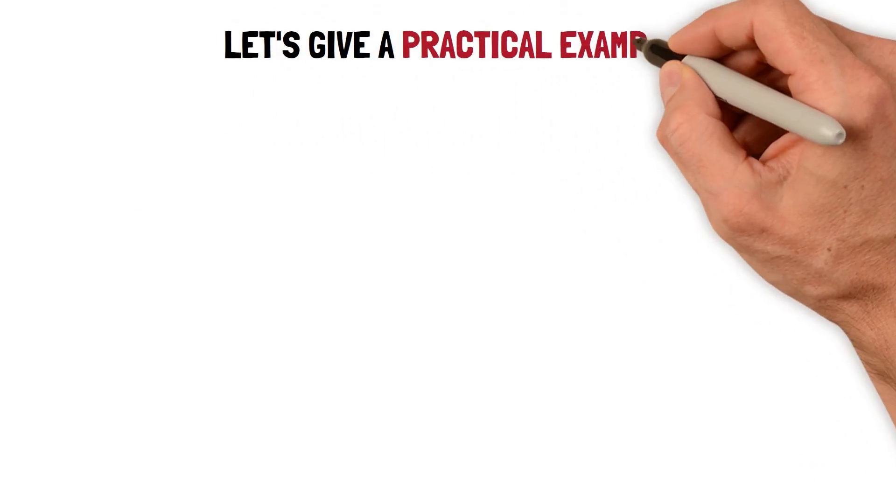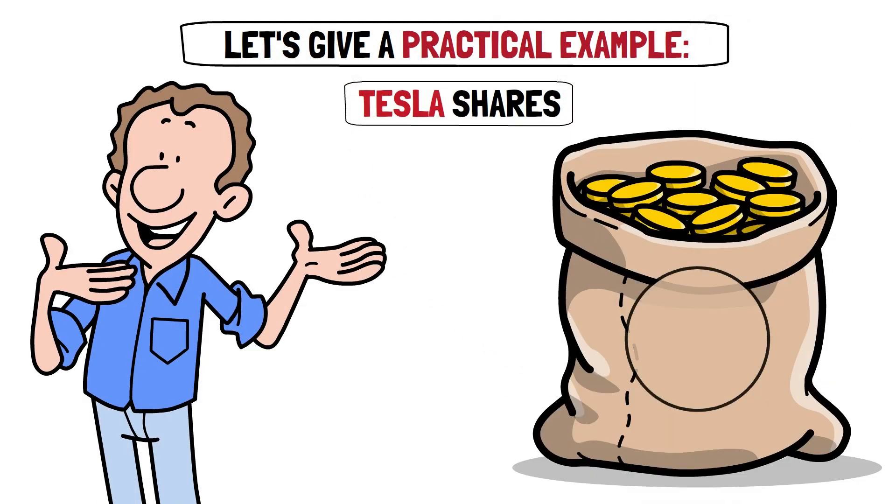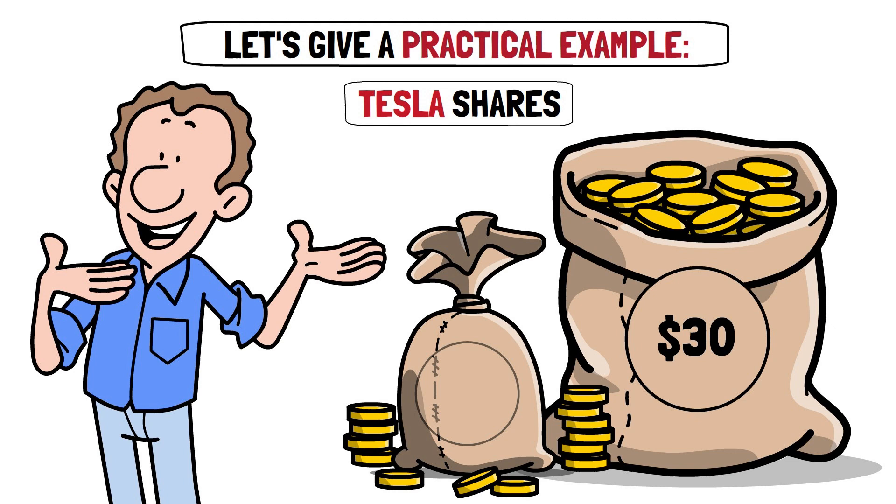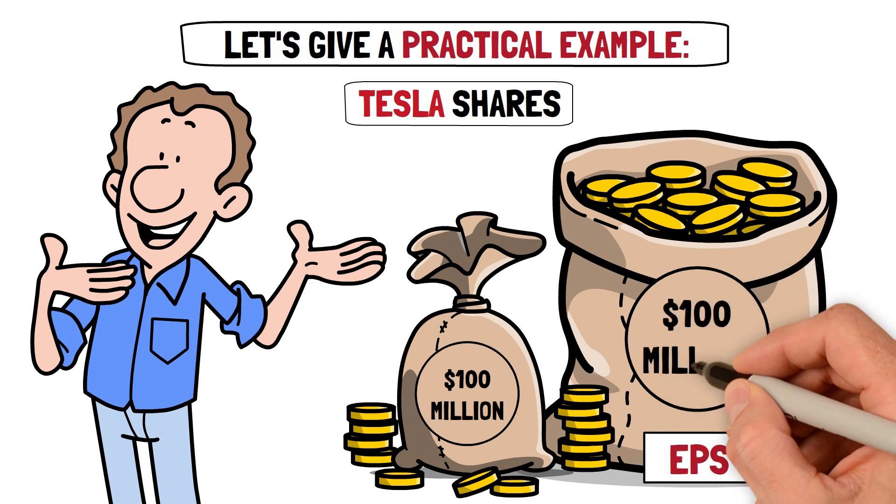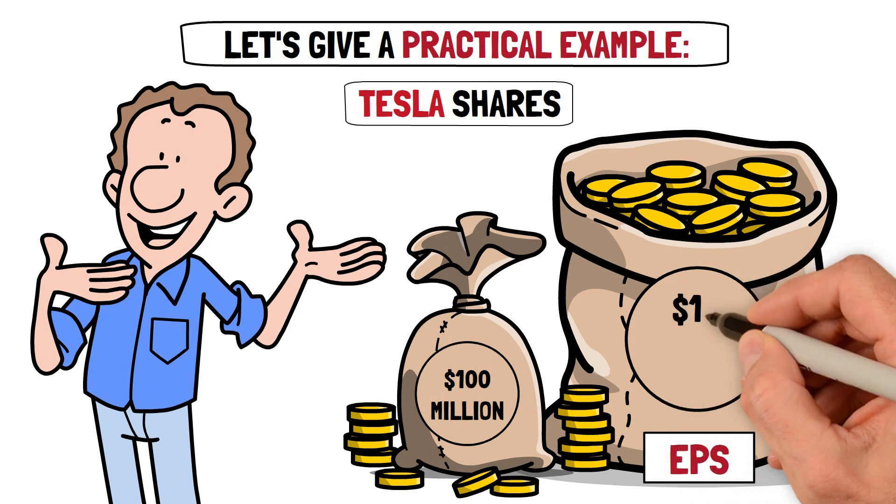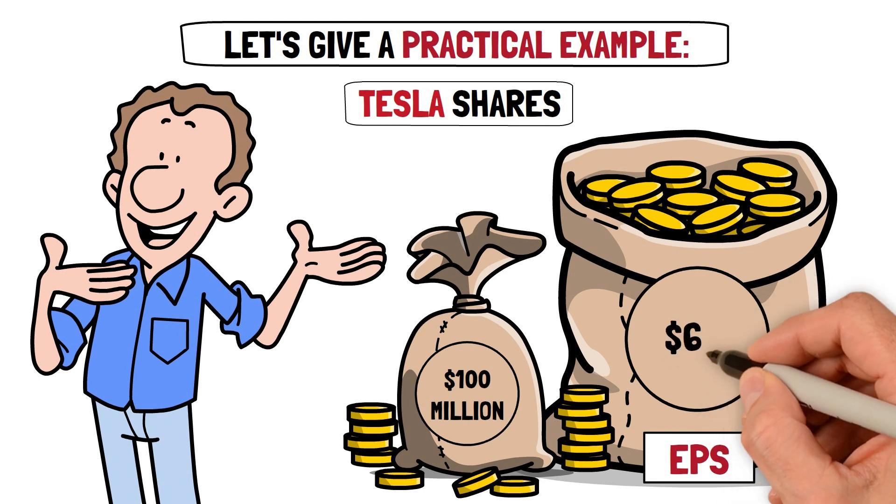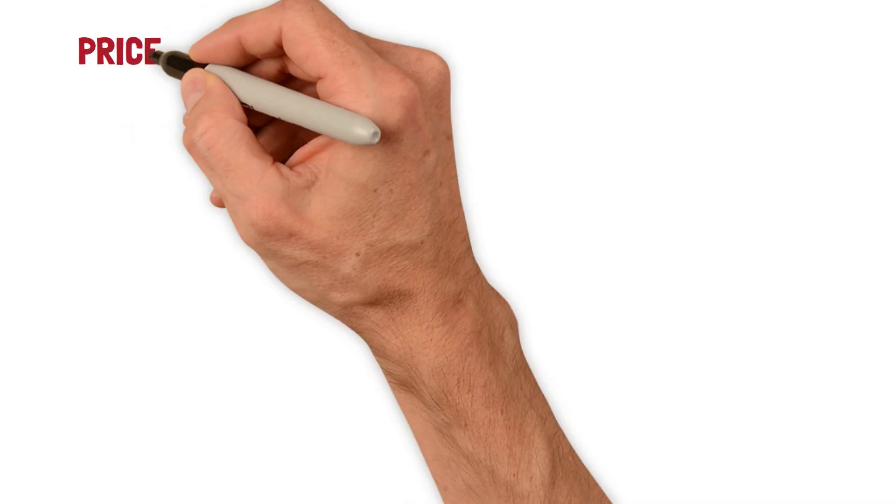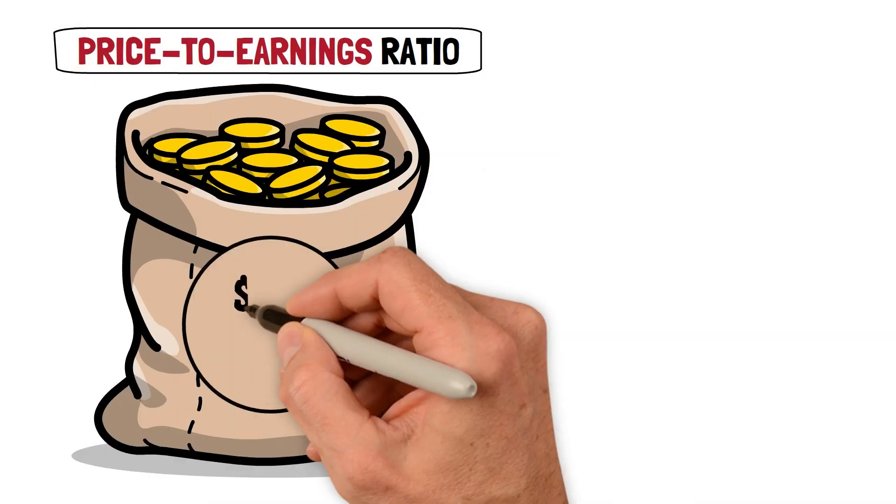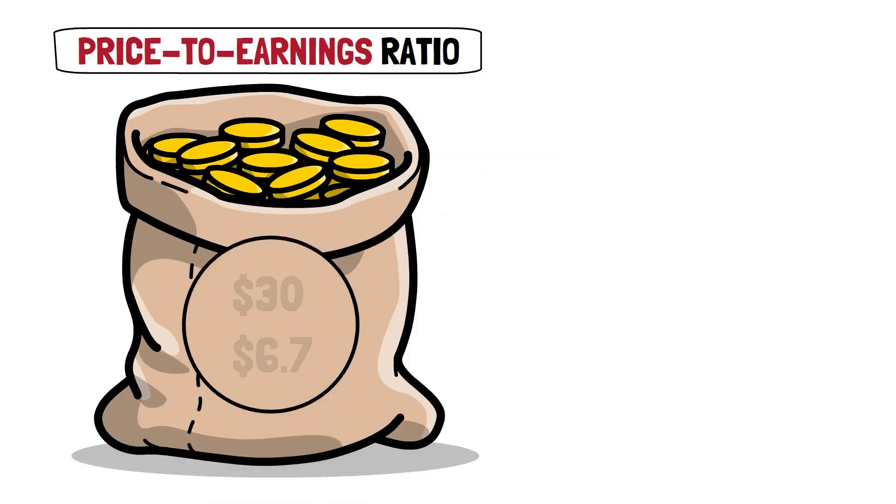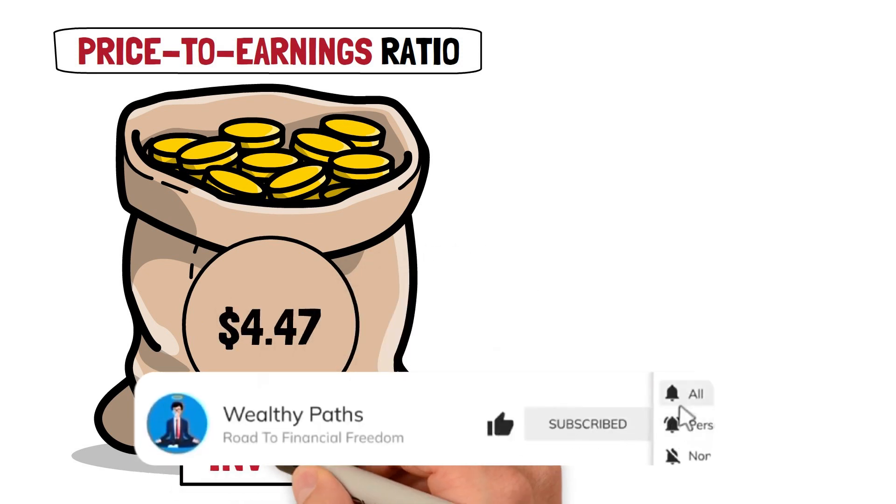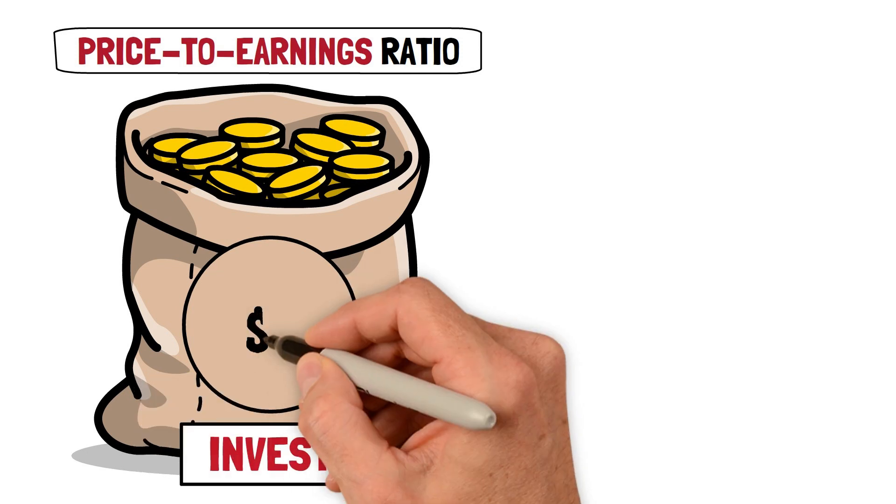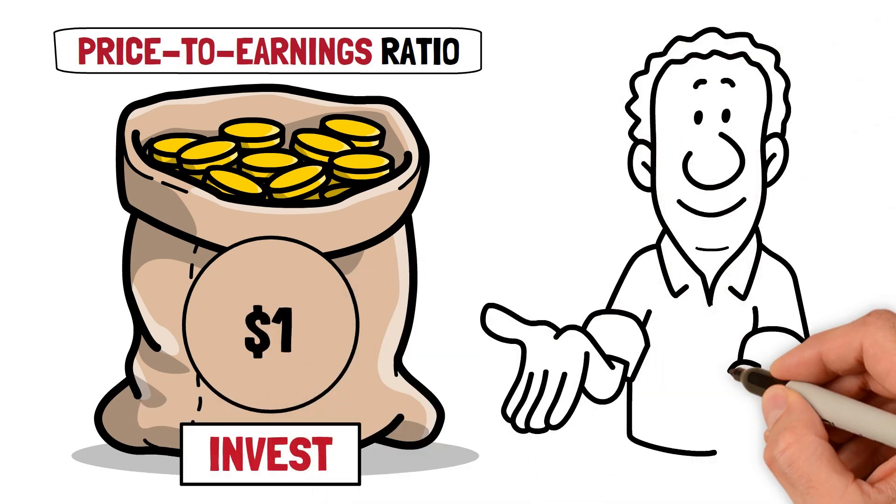Let's give a practical example. Suppose you buy Tesla shares for $30 each. Assume Tesla makes $100 million in profit from $15 million in circulation. The EPS would be calculated as $100 million divided by $15 million, which equals $6.70 on approximation. The price to earnings ratio will be calculated as $30 divided by $6.70, which equals $4.47. The implication is that you need to invest $4.47 for every $1 in profit. That's it.